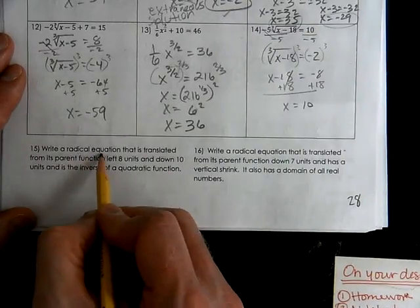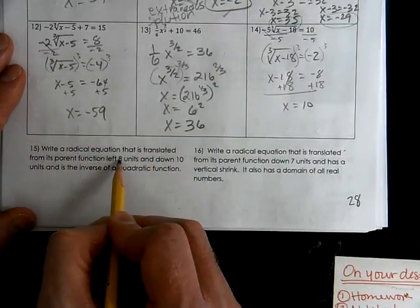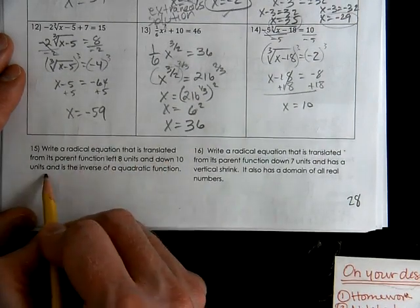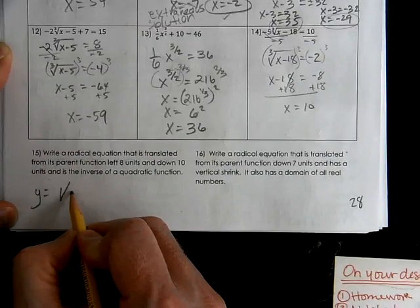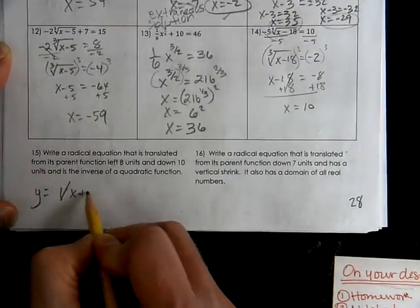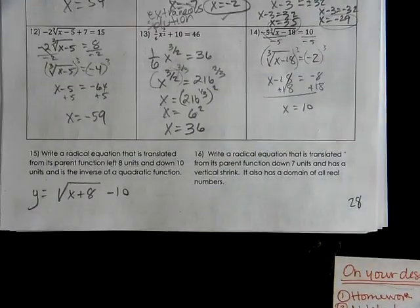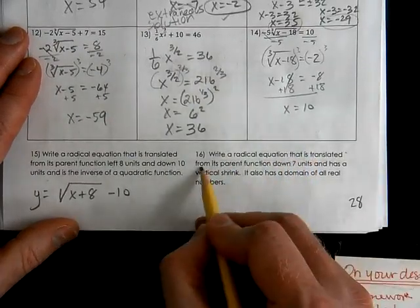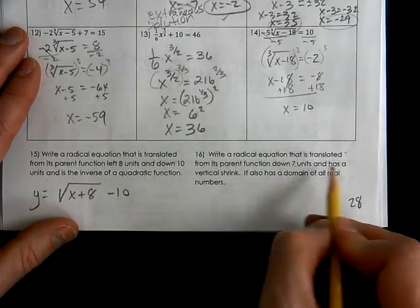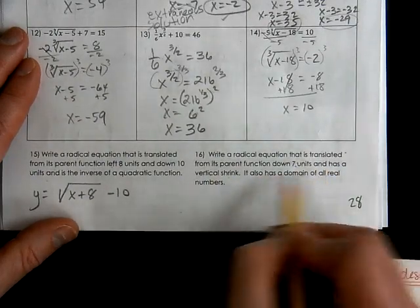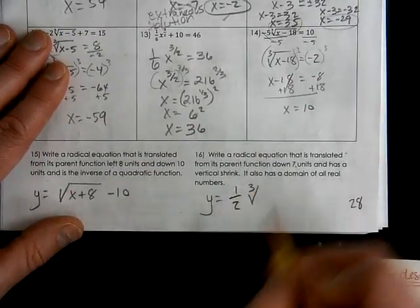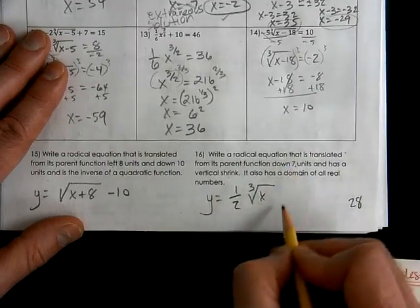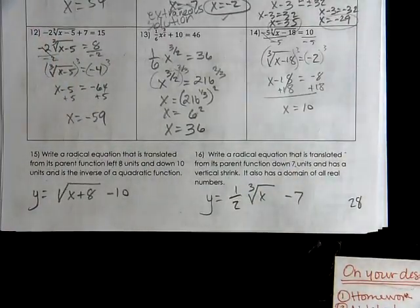Last two word problems: write a radical equation that is translated from its parent function left 8 units, down 10 units, and whose inverse is a quadratic. Left 8 units means x plus 8, down 10 — doesn't talk about any reflections or stretching, so there you go. Write a cubic equation: down 7 units has a vertical shrink and its domain is all real numbers. A vertical shrink means we need a number less than 1 as our a value. All real numbers requires it to be cubic, and we want it down 7 so the 7 has to be the k value. Good luck.